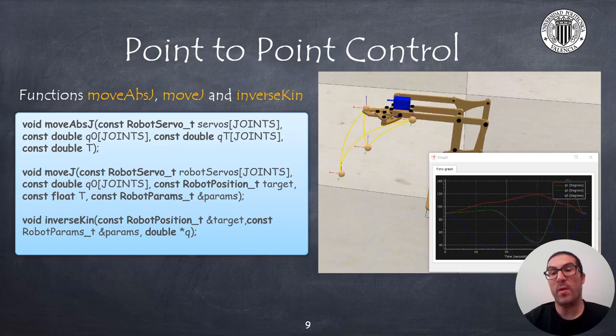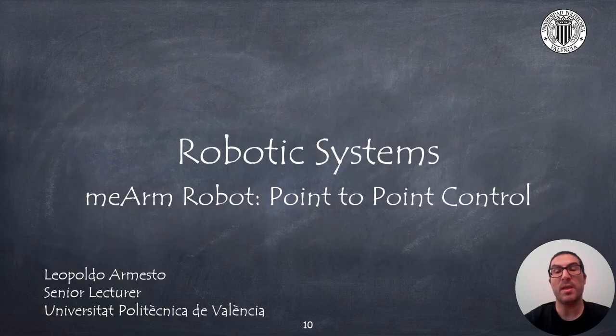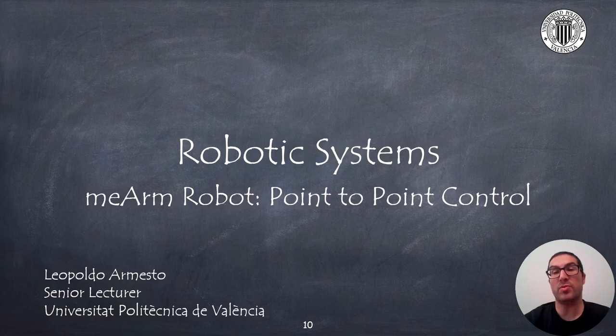And then, once the target configuration is obtained, the movej function will call the moveapsj function that I previously explained in another video. In this presentation, I have explained how to implement the point-to-point control on the meArm robot. Thank you very much.